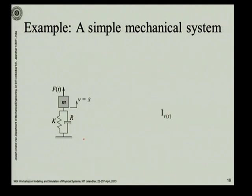Now let us see how we model this. We start with a one-junction. A one-junction is an element and it has certain grammar associated with it. All the bonds that are connected to a one-junction have the same information of flow. Right now I just want to show you how this simple system can be modeled.